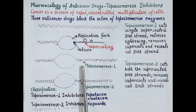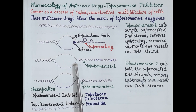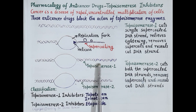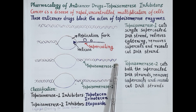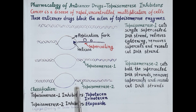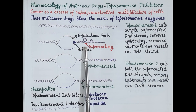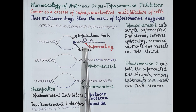Thus supercoils are removed, and after removal of supercoils, topoisomerase 1 then reseals this cut DNA strand. The replication fork can then further move in the forward direction and unwind the double-stranded DNA helix. On the other hand, topoisomerase 2 cuts both supercoiled DNA strands, removes the supercoils, and then reseals both cut DNA strands. Thus, topoisomerase enzymes are essential to remove supercoils and help in the separation of the two DNA strands for DNA replication.